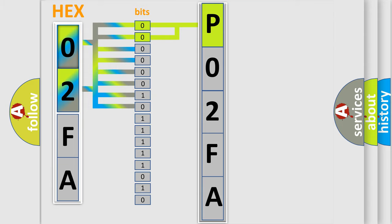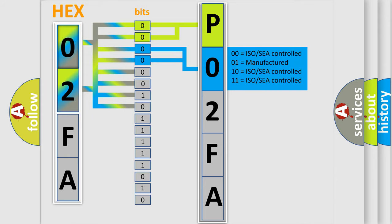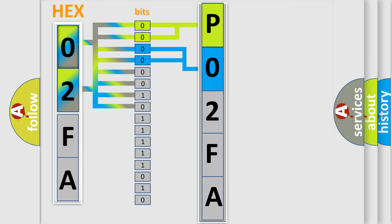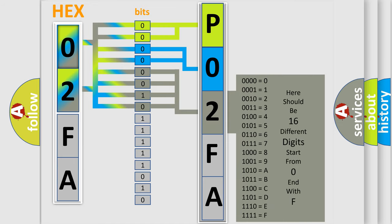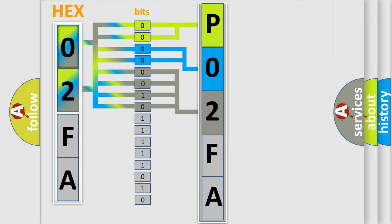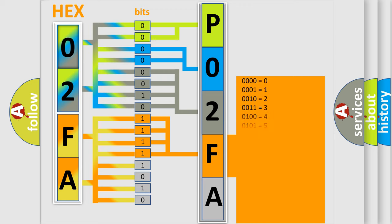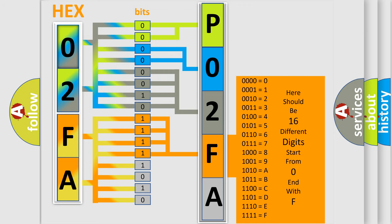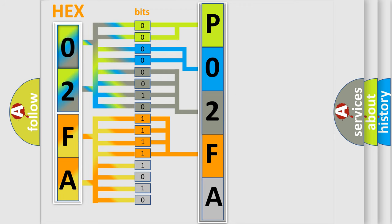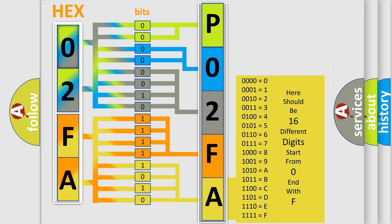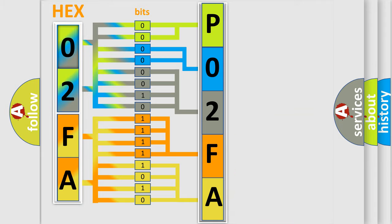The next two bits determine the second character. The last four bits of the first byte define the third character of the code. The second byte is composed of a combination of eight bits. The first four bits determine the fourth character of the code, and the combination of the last four bits defines the fifth character. A single byte conceals 256 possible combinations.